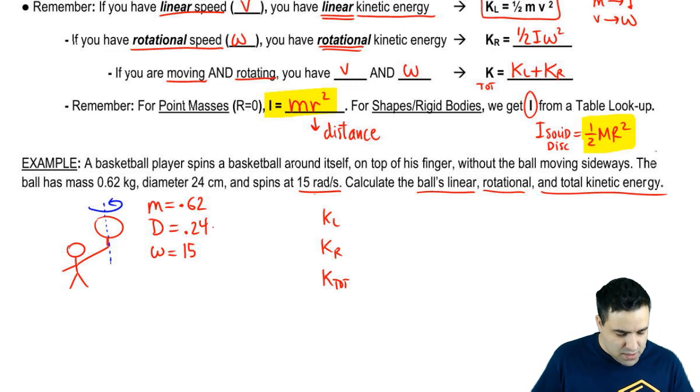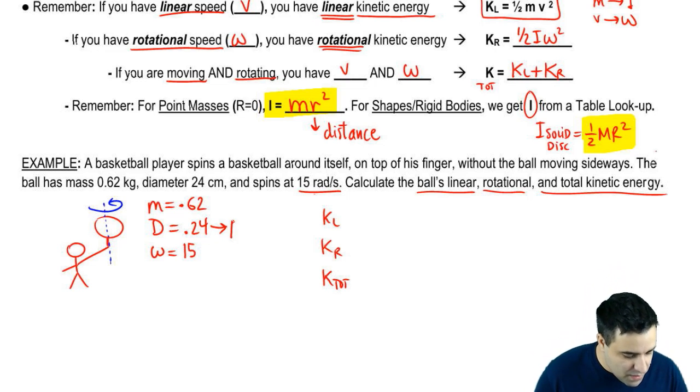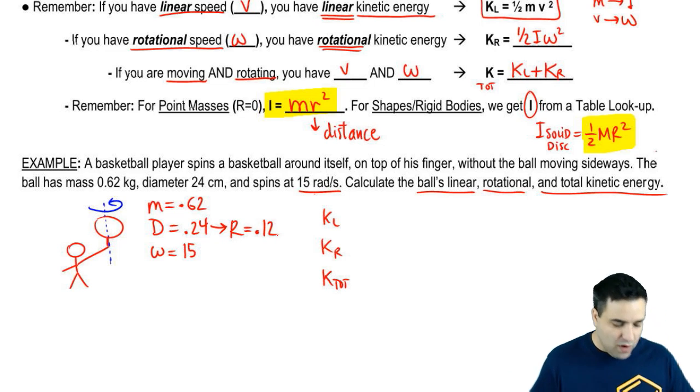So first things first, you may already have caught this. In physics, we never use diameter. We always use radius. So when you see the diameter, you immediately convert it to radius. Radius is half, so it's 0.12.